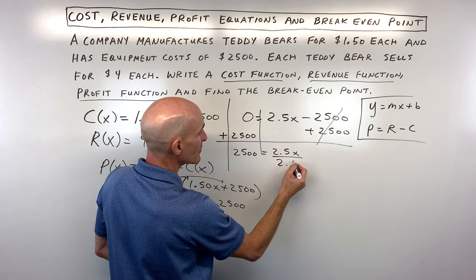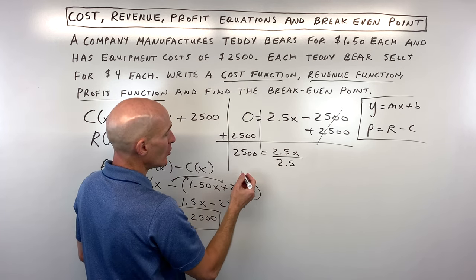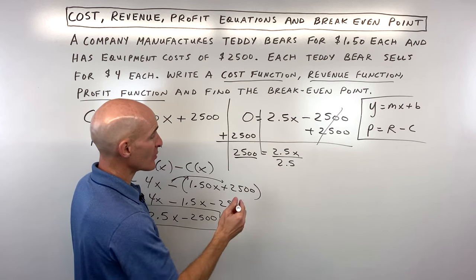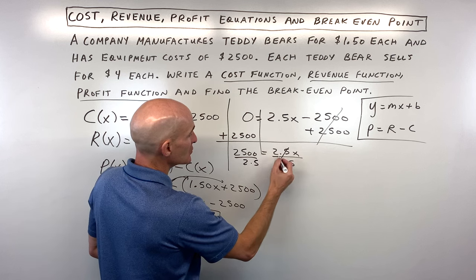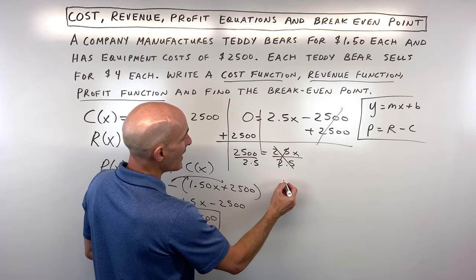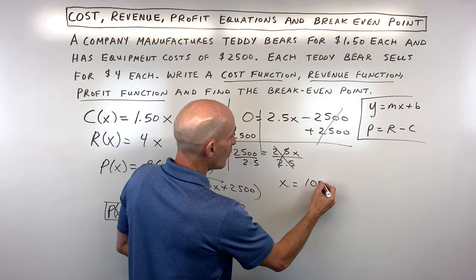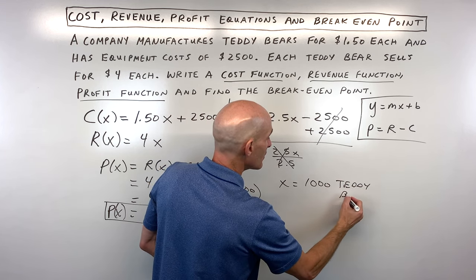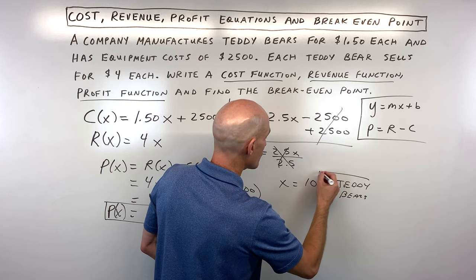We're trying to solve for the number of teddy bears that need to be sold and made in order to make a profit of 0. That's our break-even. So divide both sides by 2.5, and 2,500 divided by 2.5 is equal to 1,000 teddy bears. And that would be your break-even point.